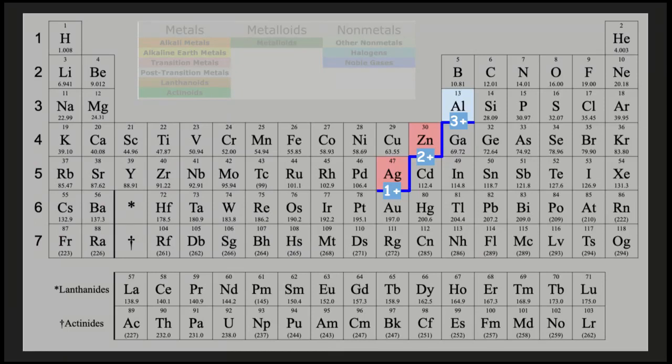This is an easy way of remembering what charge those three have. You can notice that they are in a staircase with silver, zinc, and aluminum. Their charges are 1-plus, 2-plus, 3-plus, and it just goes up the staircase. Don't use Roman numerals with those.